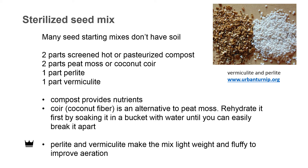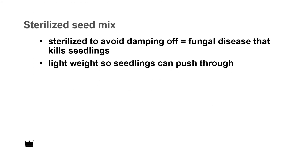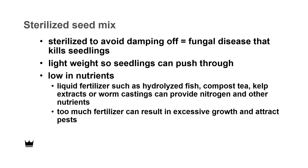If your coir has come in a block, rehydrate it first by soaking it in a bucket with water until you can easily break it apart. Perlite and vermiculite are used to make the mix lightweight and fluffy to increase aeration. A sterilized seed mix is important because sterilized mixes avoid damping off — they don't contain spores of fungi which cause the seedlings to die. Another attribute of a good seed mix is that it should be lightweight so seedlings can push through. Most seed starting mixes don't have very many nutrients, so it may be necessary to add fertilizer if the seedlings start to look spindly or yellow.